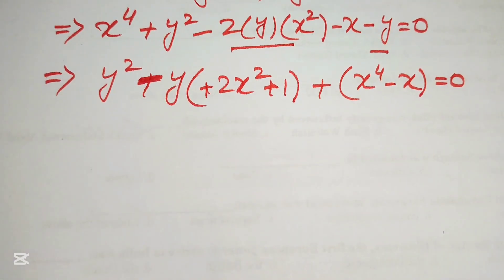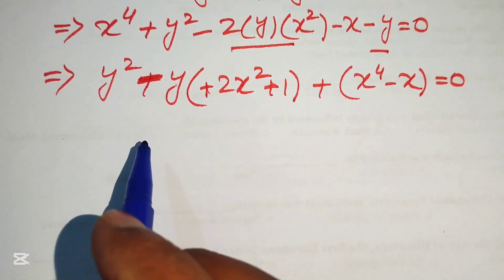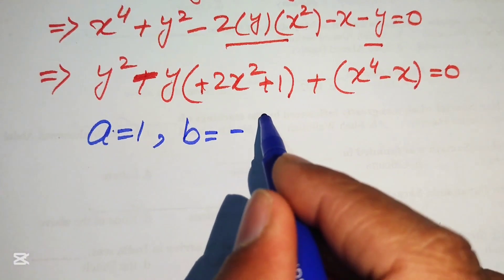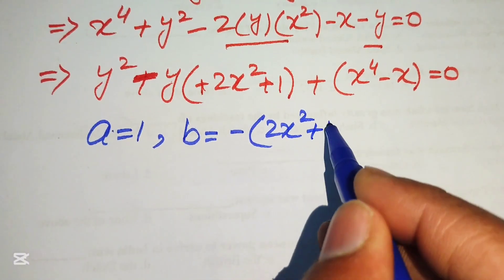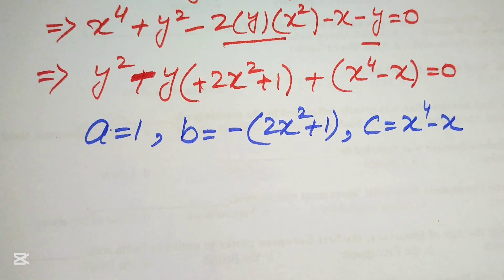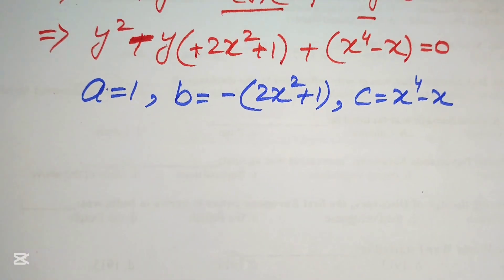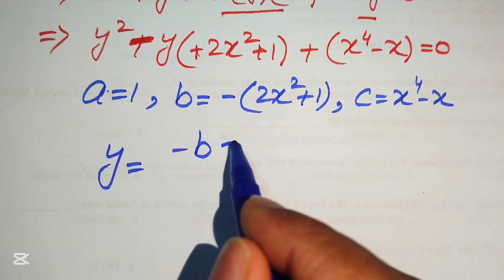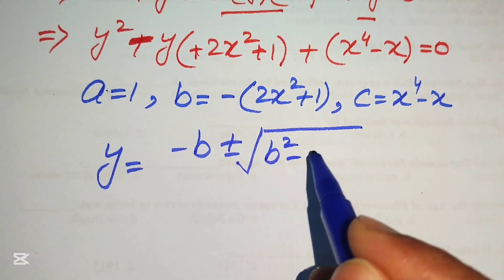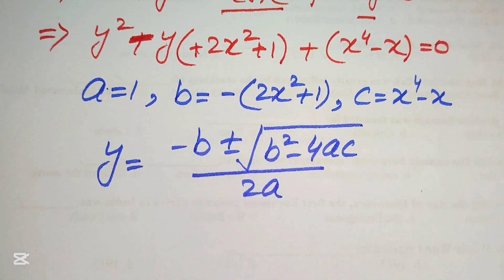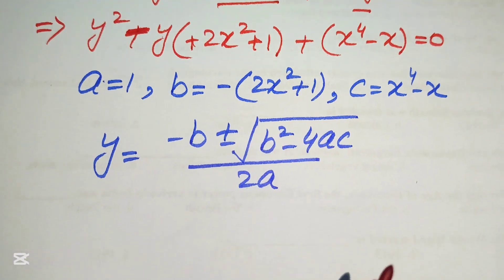This equation is quadratic in the variable y, so we apply the quadratic formula. The coefficients are a equals 1, b equals negative 2x squared plus 1, and c equals x to the power of 4 minus x. We apply the quadratic formula: y equals negative b plus or minus square root of b squared minus 4ac, divided by 2a.